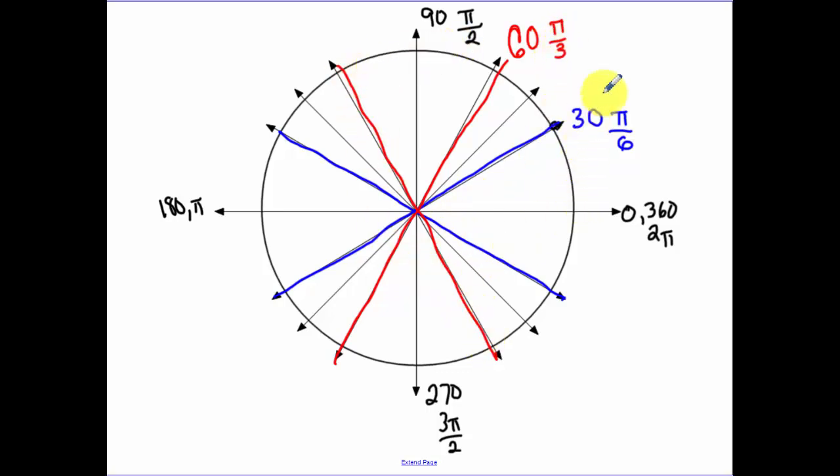So all the ones in red are multiples of 60. So I went up 30, 60, 120. 120 is twice 60. So that's why this is 2 pi over 3. Down here, this one is 150. Notice how my reference angle would be 30 degrees. So 150 is 5 times 30. That's why this is 5 pi over 6.